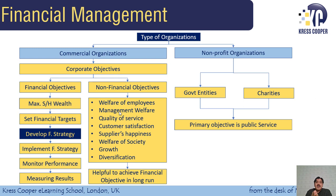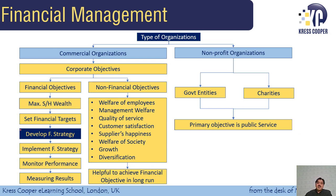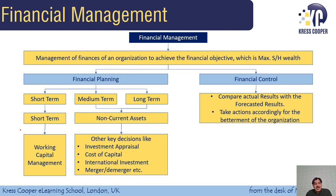Whenever an organization is setting financial objectives, it develops a financial strategy to achieve those objectives. This financial strategy is always part of the corporate strategy. When developing the financial strategy, the organization sets financial targets, then develops and implements the financial strategy, and controls the results. This process is called financial planning and financial control. By definition, financial management is the management of finances of an organization to achieve the financial objectives — and the primary objective of a commercial organization is to maximize the wealth of the shareholder.